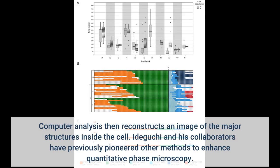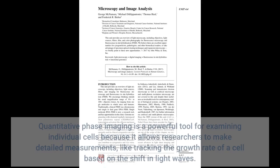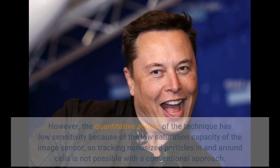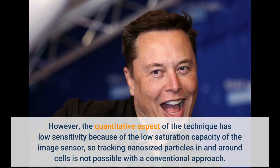Idiguchi and his collaborators have previously pioneered other methods to enhance quantitative phase microscopy. Quantitative phase imaging is a powerful tool for examining individual cells because it allows researchers to make detailed measurements, like tracking the growth rate of a cell based on the shift in light waves. However, the quantitative aspect of the technique has low sensitivity because of the low saturation capacity of the image sensor, so tracking nanosized particles in and around cells is not possible with a conventional approach.